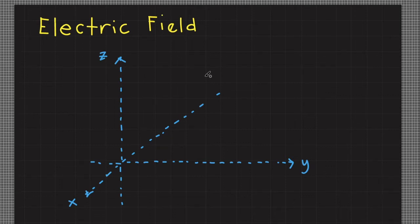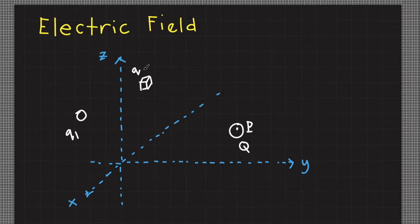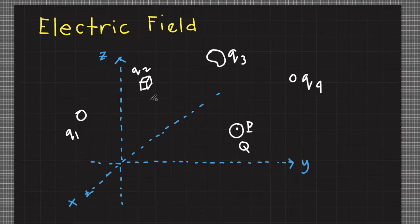Our topic for today is about electric field. To give you an introduction, consider this three-dimensional space. Let's choose any position here — for example, at this point. Let's call this point P, and at point P we position a test charge, let's call it capital Q. Now if there is a source charge here, let's name it q sub 1, another source charge q sub 2, here q sub 3, and another point charge q sub 4, and so on.